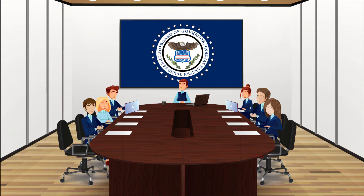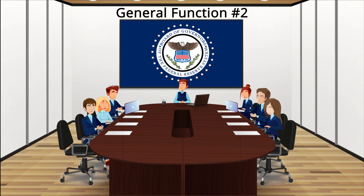The Federal Reserve System has five general functions to promote the optimal function of the U.S. economy. First, conducting monetary policy to create maximum employment, stabilize prices, and moderate long-term interest rates. Second, minimizing and containing systemic risk by actively monitoring and engaging within the U.S. and overseas. Third, overseeing the effective functioning of financial institutions while also monitoring their impact on the financial system in its entirety. Fourth, offering services to the banking system and the U.S. government that allow safe and efficient U.S. dollar transactions and payments.